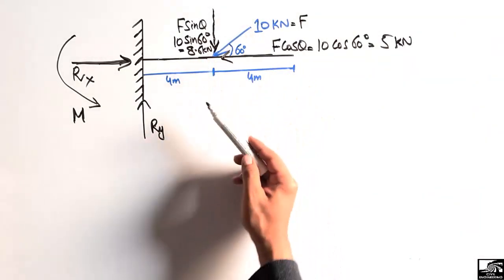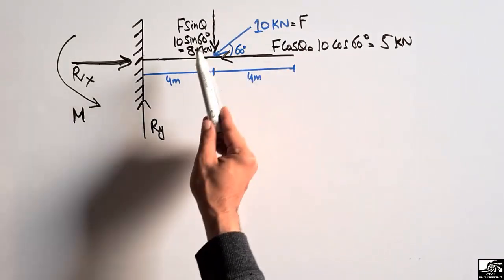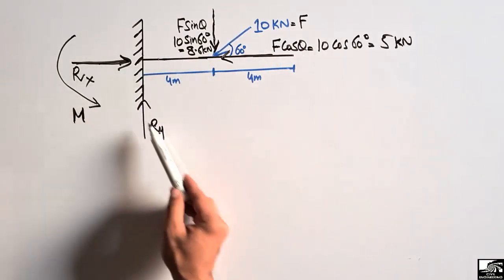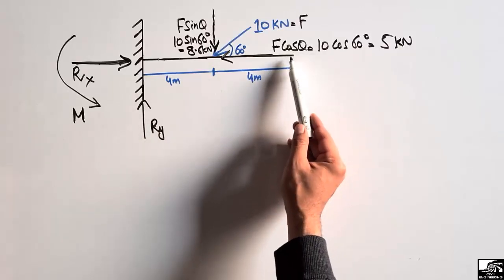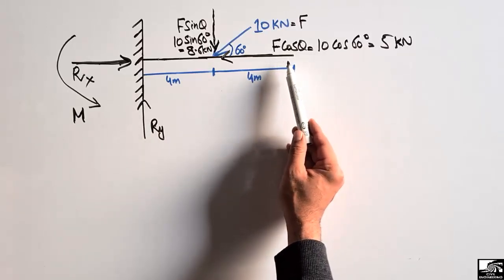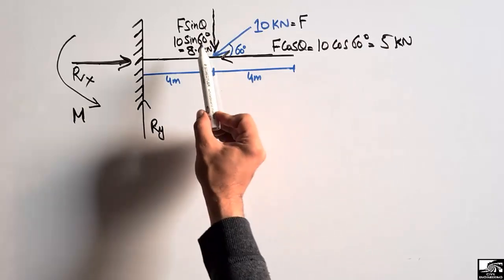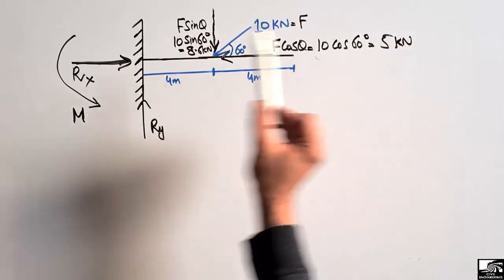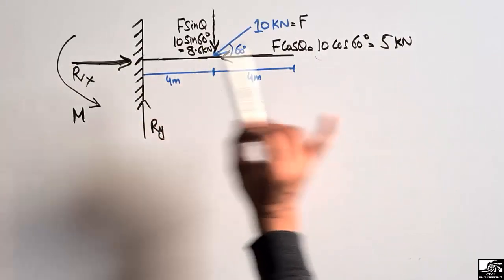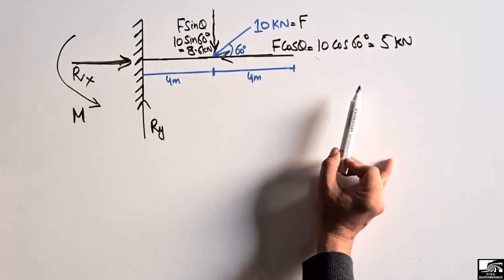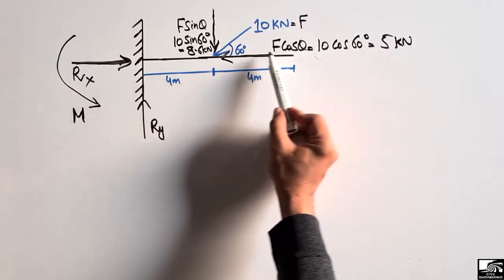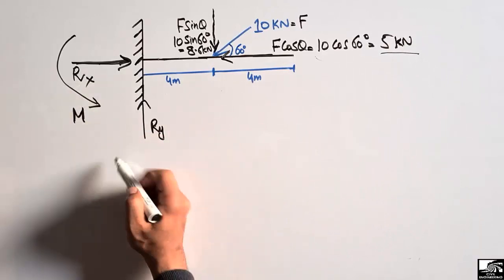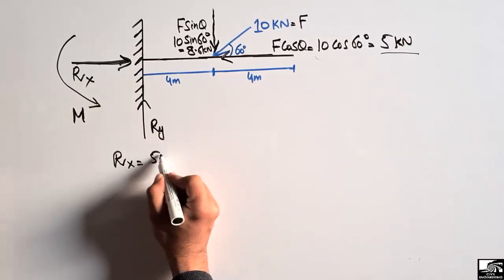After finding the two components — vertical and horizontal — we can now find the support reactions. Since there is no other support to resist horizontal load, the only support is this fixed support. The entire horizontal load of 5 kilonewtons will be taken by Rx, so Rx equals 5 kilonewtons.